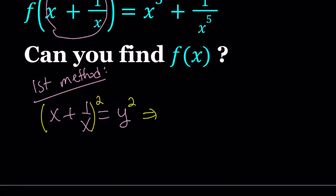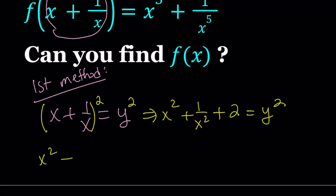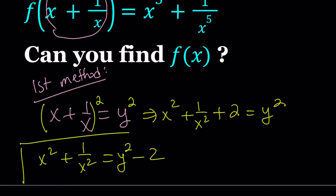Squaring gives us x squared plus 1 over x squared plus 2 times x times 1 over x — but I can just write it as a 2 as a shortcut — and this equals y squared. So from here, I can isolate x squared plus 1 over x squared; it becomes y squared minus 2. This is something we're going to be using all the time.